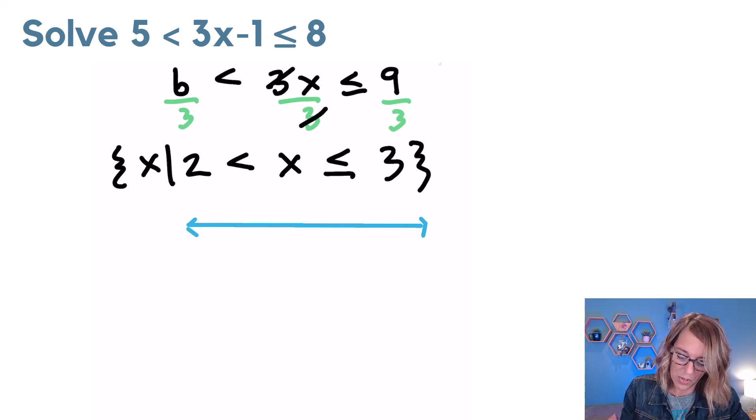I just need from 2 to 3. So let's put a 0 here. One, 2, 3, 4. Now at 2, it is not included. I do want everything in the middle, it's not included. So I would use a parenthesis, or you could use an open circle.